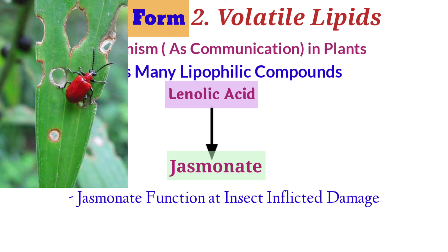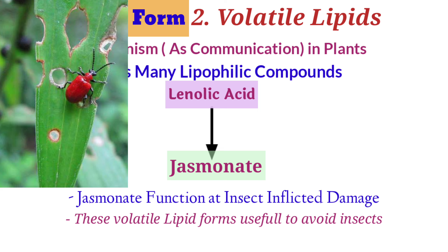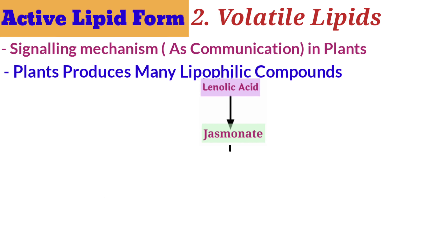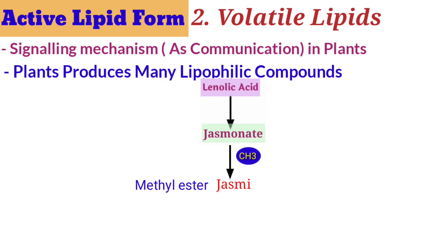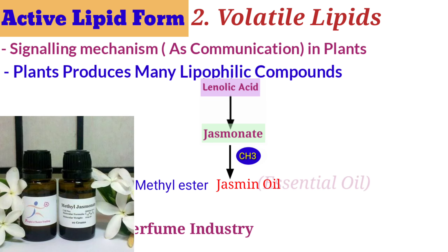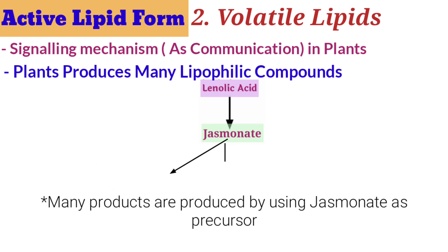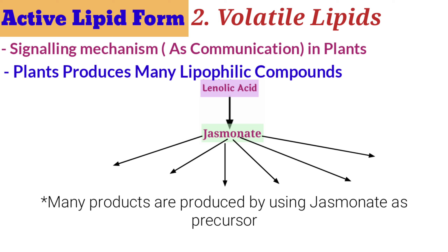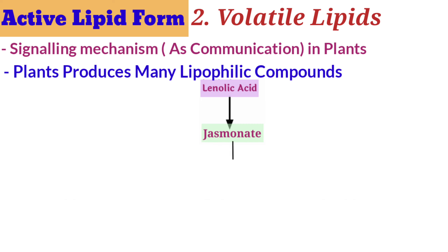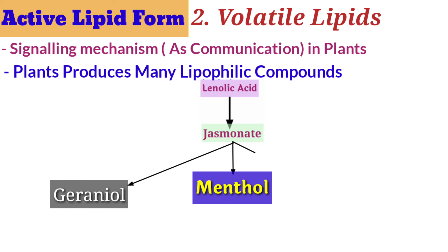Jasmonate triggers insect-implicated damage responses, so these volatile lipids are useful in plants to avoid insects. If you add a methyl group to jasmonate, the methyl ester of jasmonate is commonly known as jasmine oil — a very essential oil which gives fragrance and is used by many companies for production of fragrance-based chemicals. Well-known examples produced via jasmonate include menthol, geraniol, and limonene.